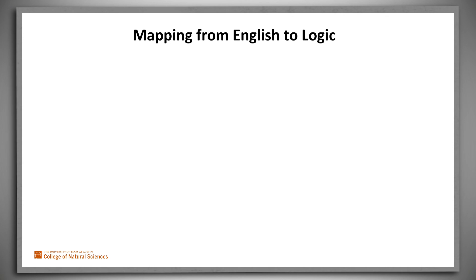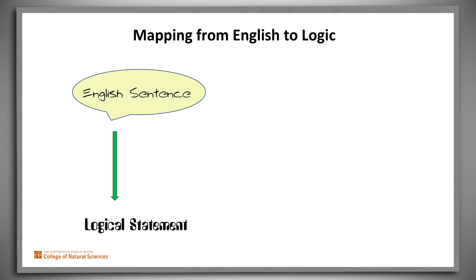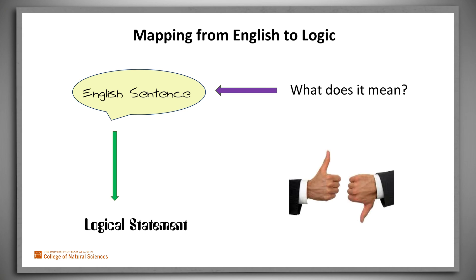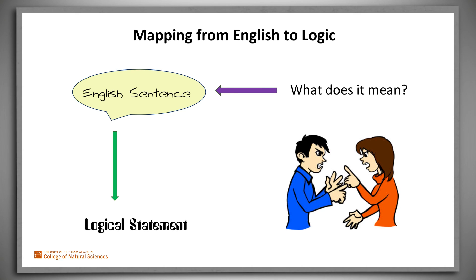Many English sentences are ambiguous and may be vague. Logical statements are not. This means two important things. Before we can translate English sentences into logical statements, we must figure out exactly what the English sentences actually mean. And people can end up disagreeing with each other because, although they agreed to some premises stated in English, they didn't actually agree on the same logical premises.